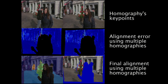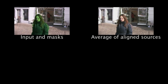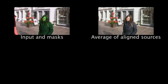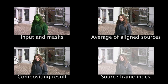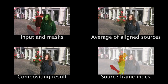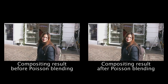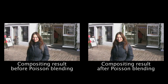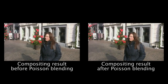The alignment error, shown in the middle row, is reduced after adding each homography. We use the average of the aligned sources as a guide to compute the inpainted result. This inpainting is computed as a composite of aligned regions that are in good agreement with each other and with the boundary of the whole. In the last step, we perform gradient domain fusion using Poisson blending for removing the illumination differences between different sources.